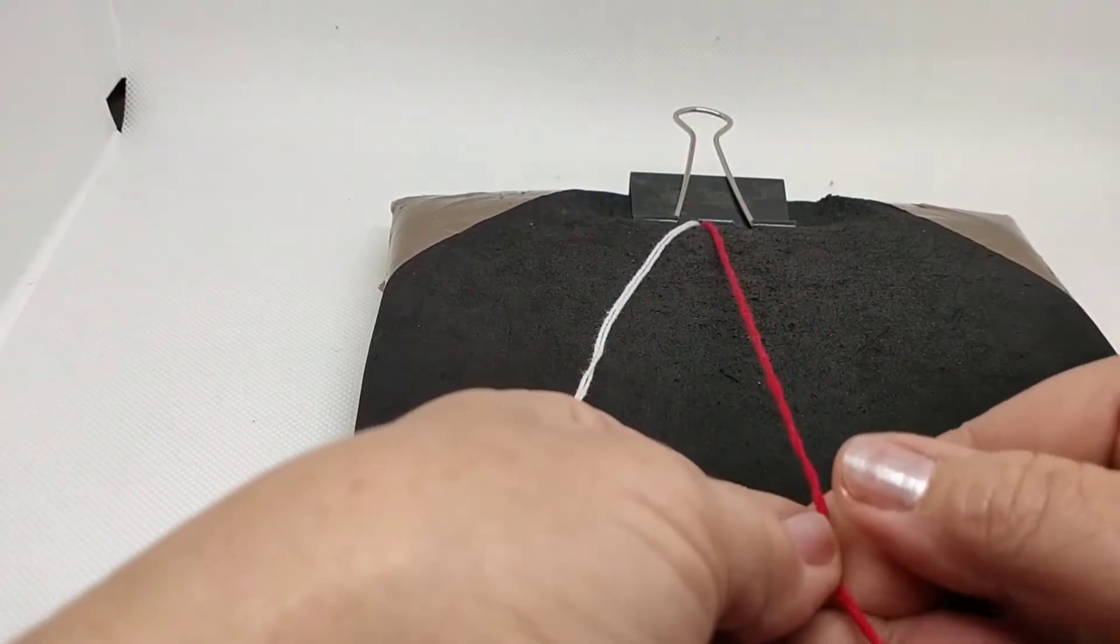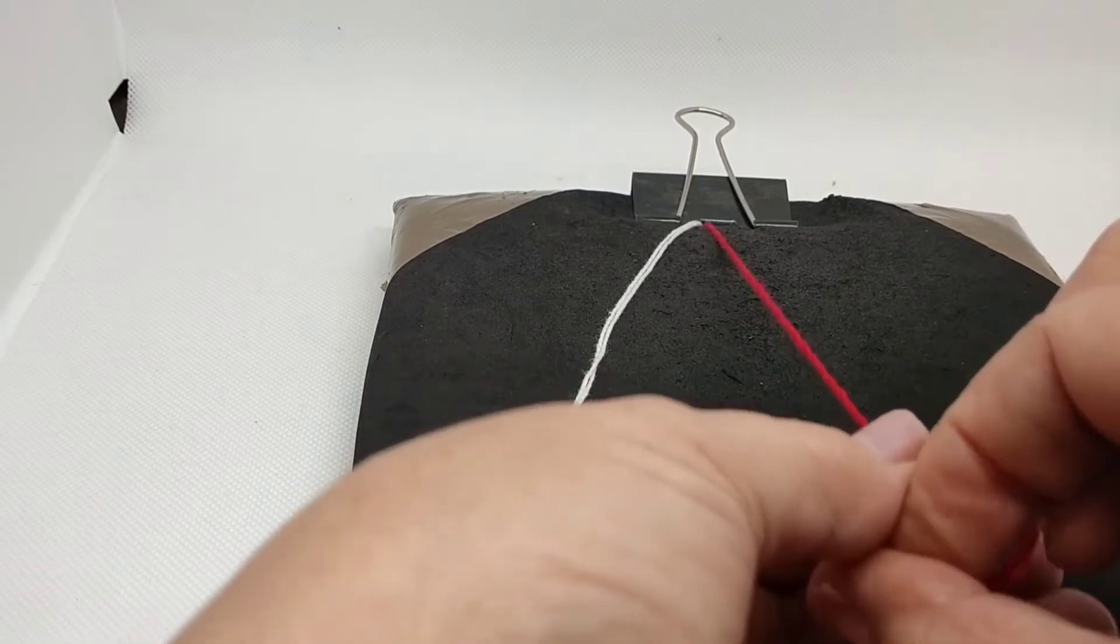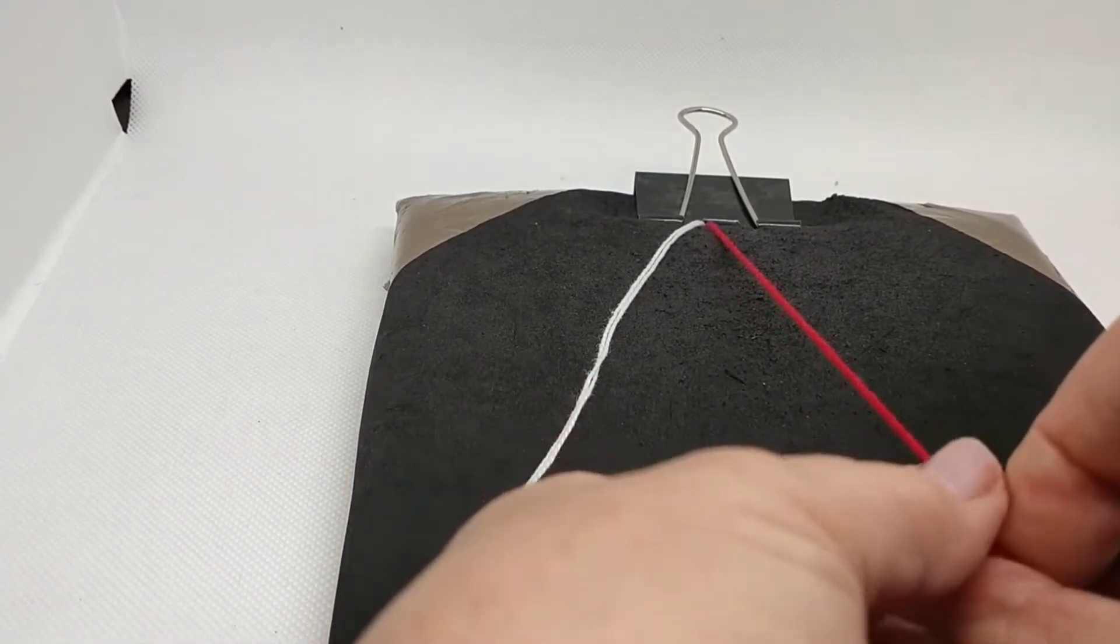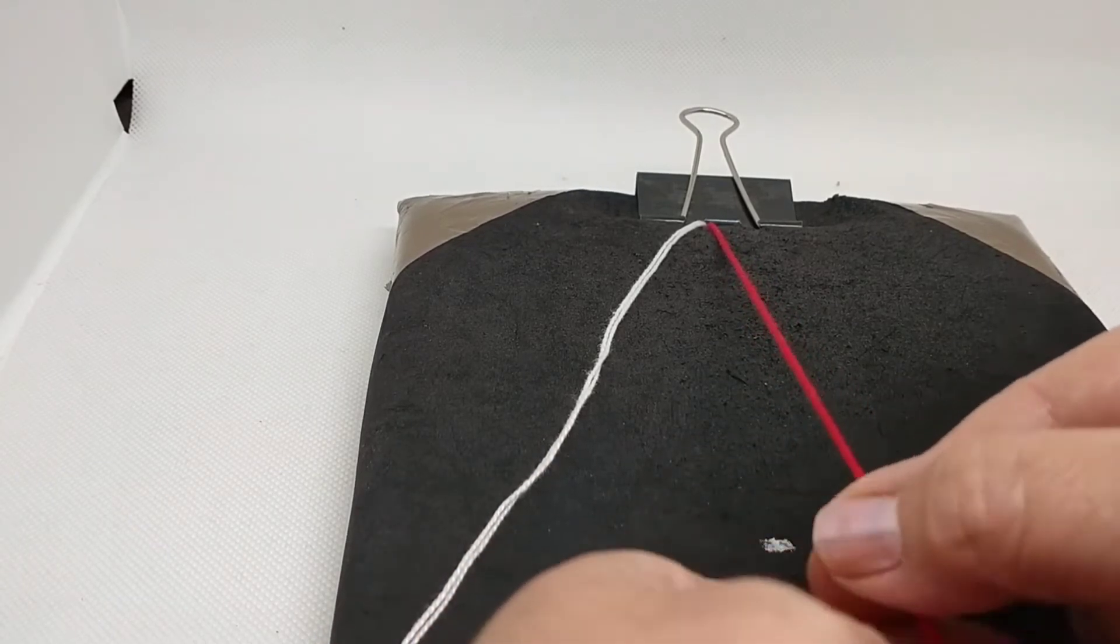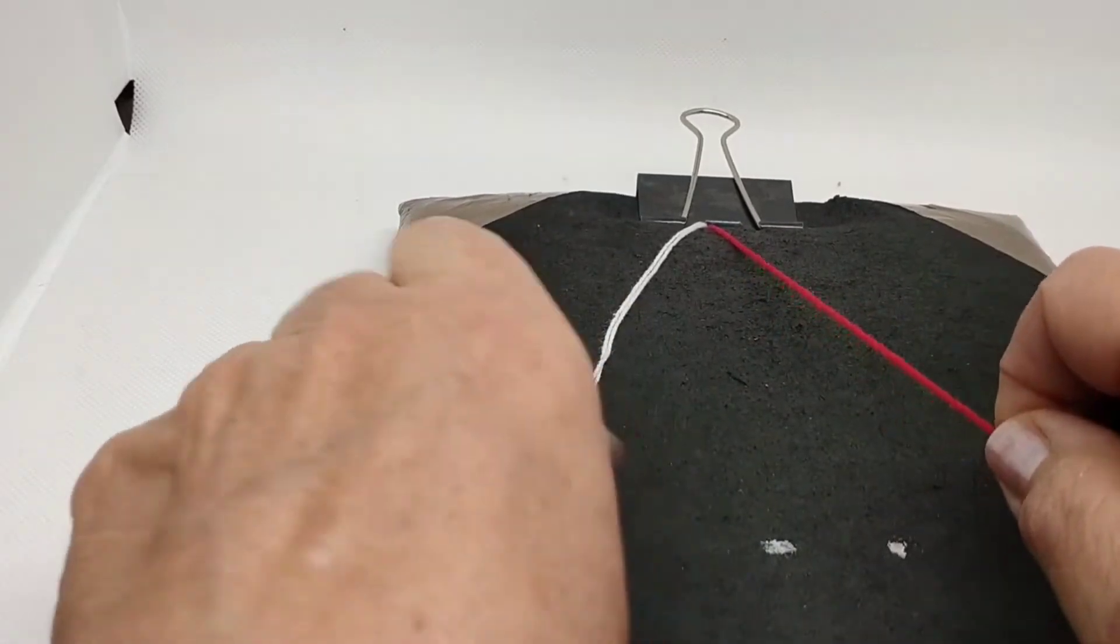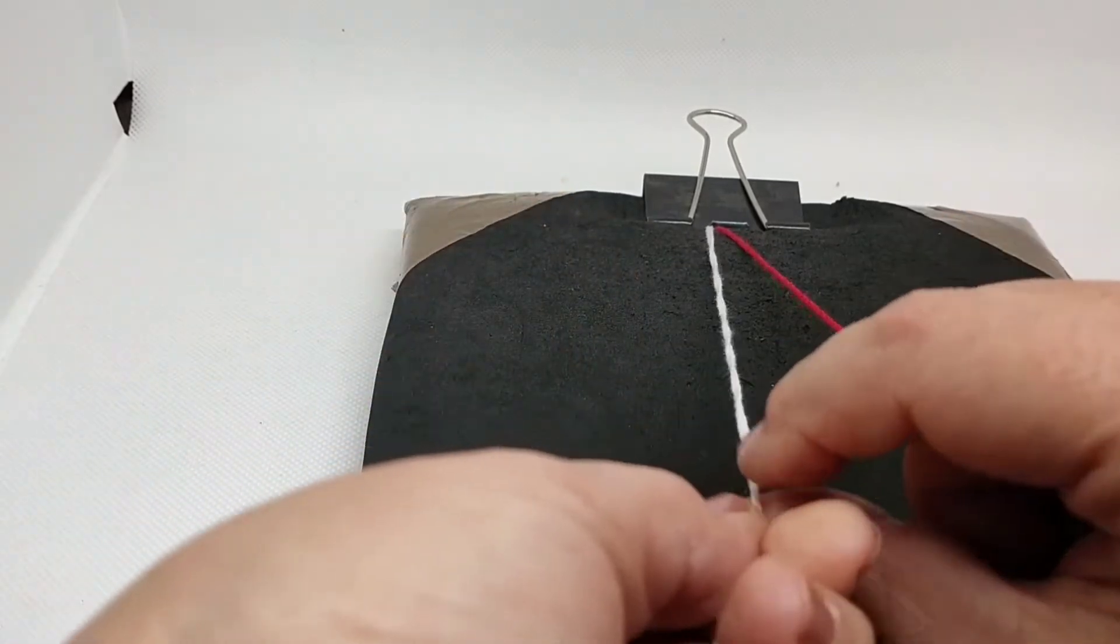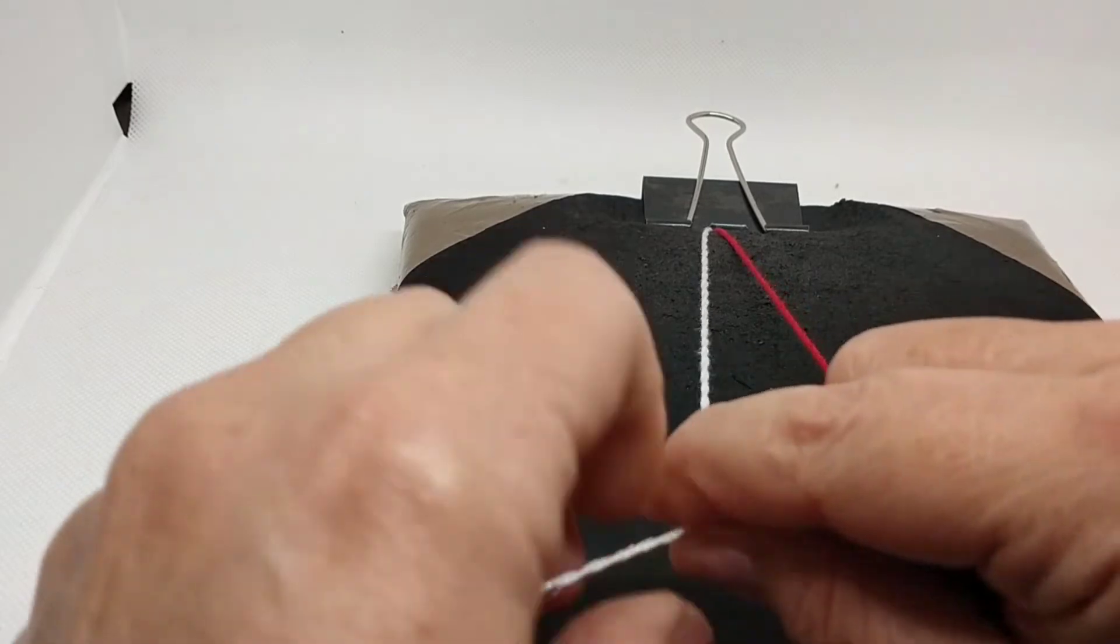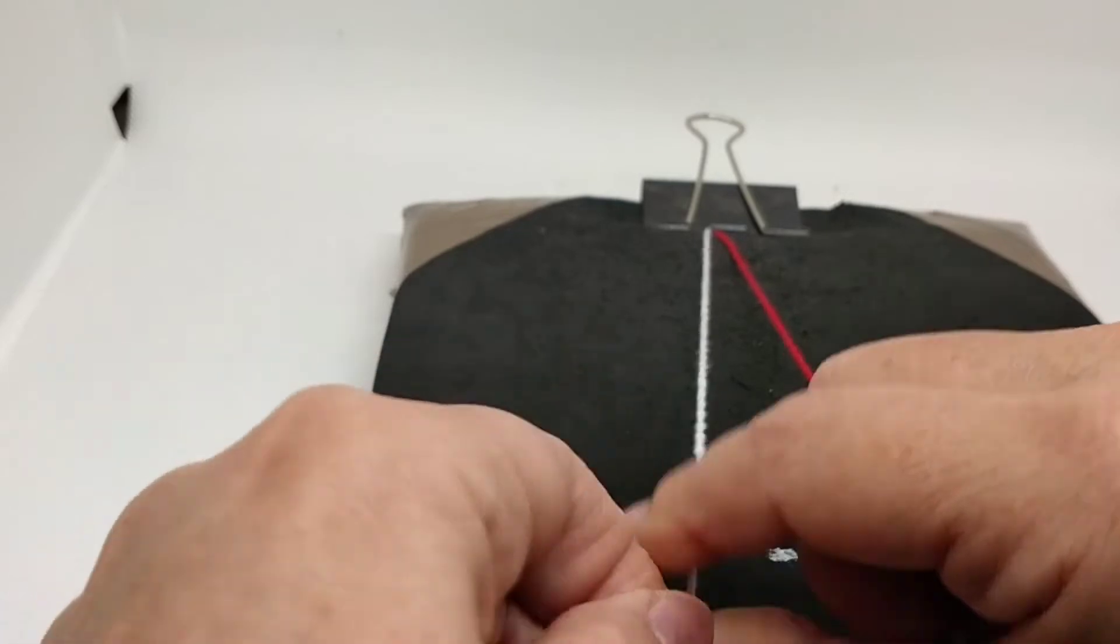Empezamos a entorchar con un giro, así. Vamos entorchando. Cuando ya la tenemos, sujetándola, cogemos las otras dos hebras blancas y hacemos exactamente igual. Una vez lo tenemos ya, las dos hebras entorchadas.